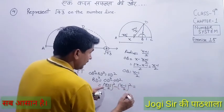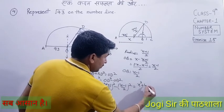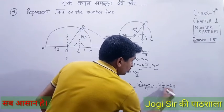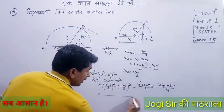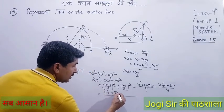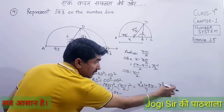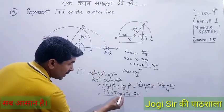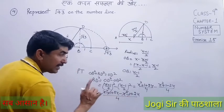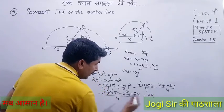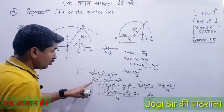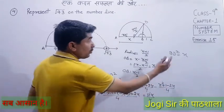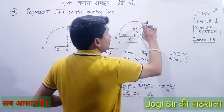Expanding: BD² = (x² + 2x + 1)/4 − (x² − 2x + 1)/4. Taking LCM as 4: numerator becomes x² + 1 + 2x − x² − 1 + 2x. The x² terms cancel, the 1 terms cancel, leaving 4x/4 = x. So BD² = x.